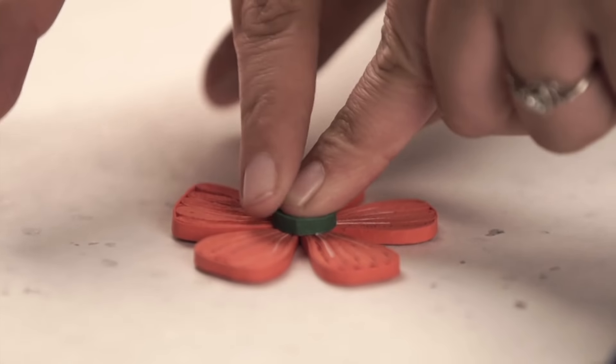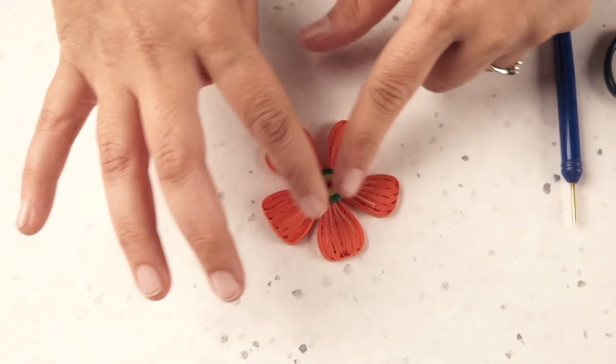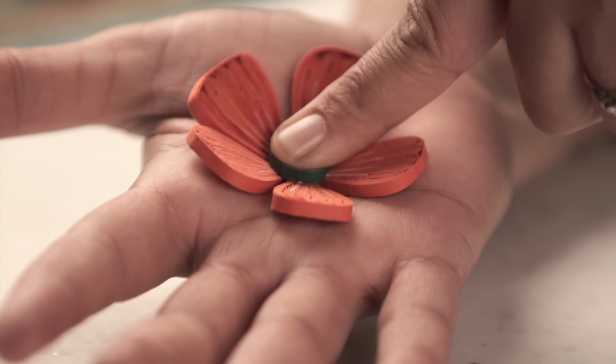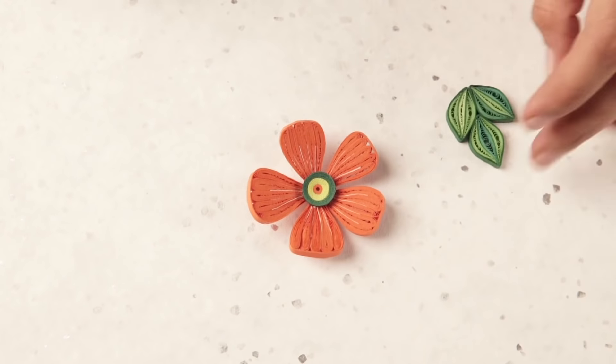Apply glue on one side and stick it. If you want, you can give it a shape by pressing down, then add a bit of leaves.